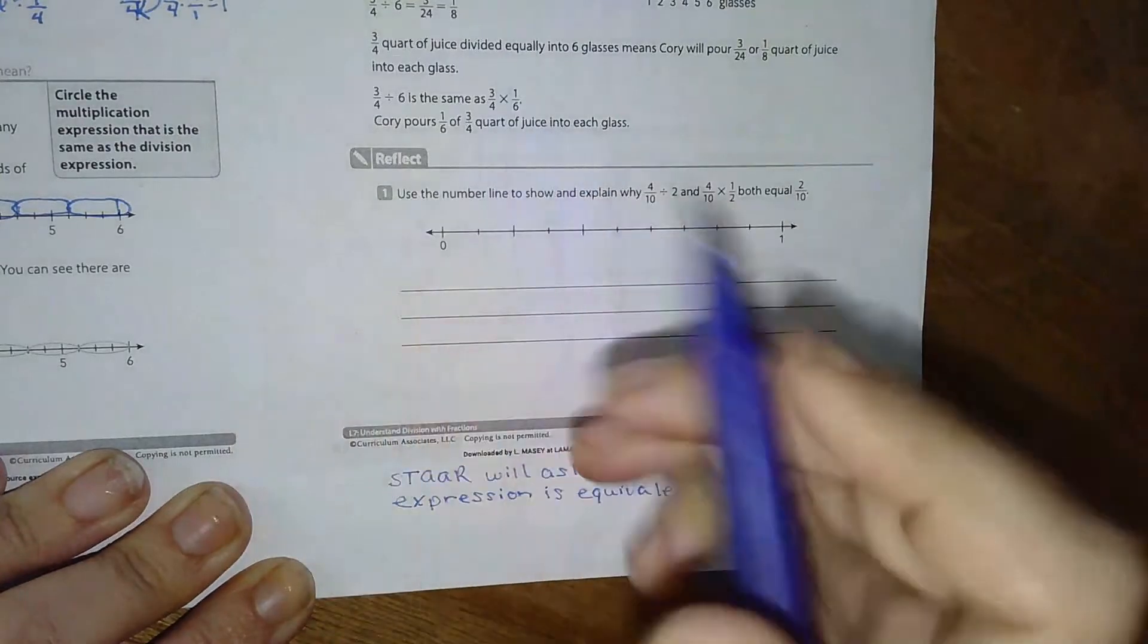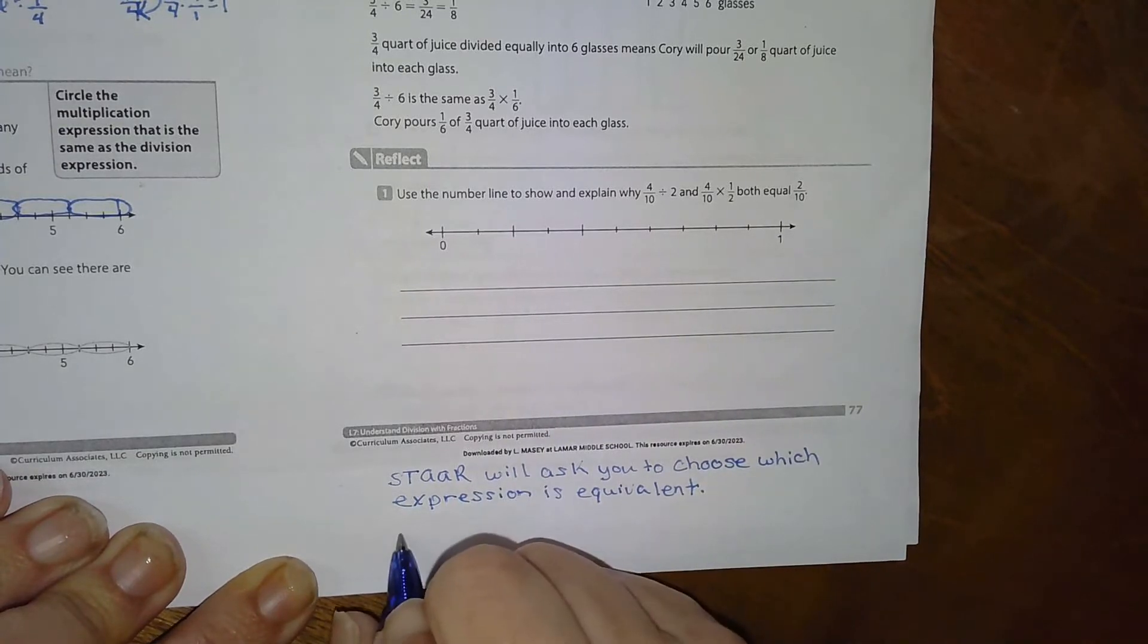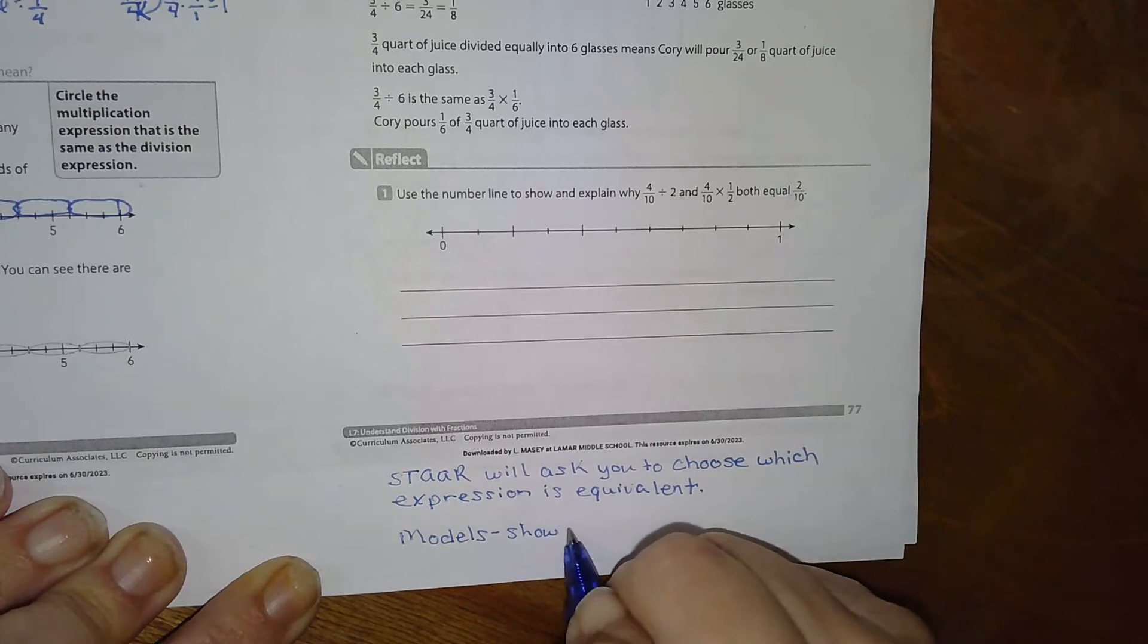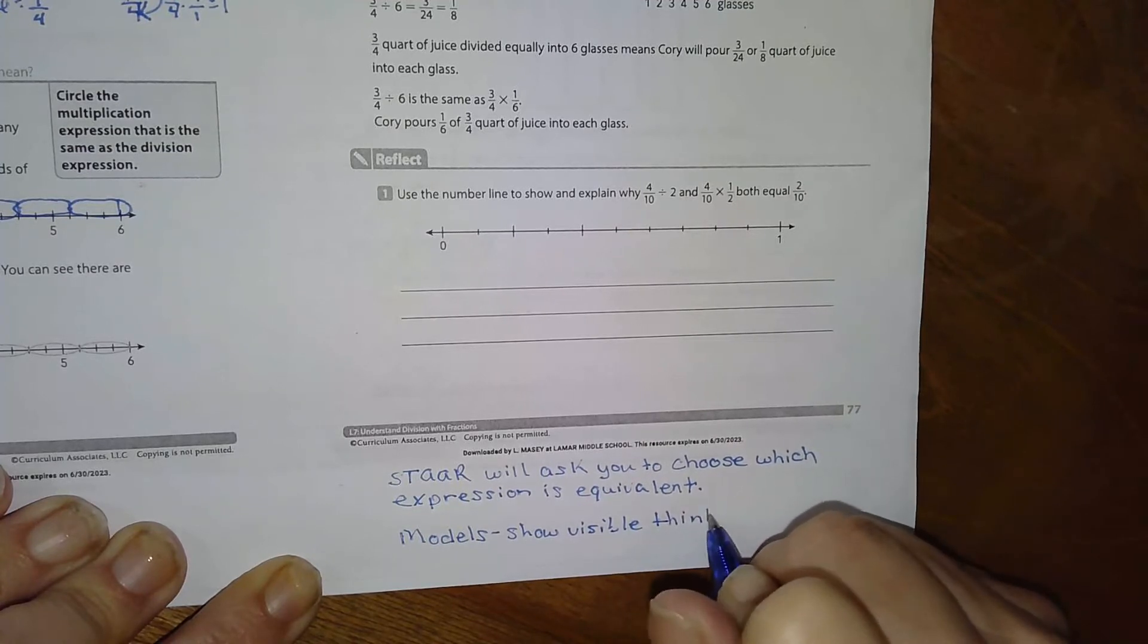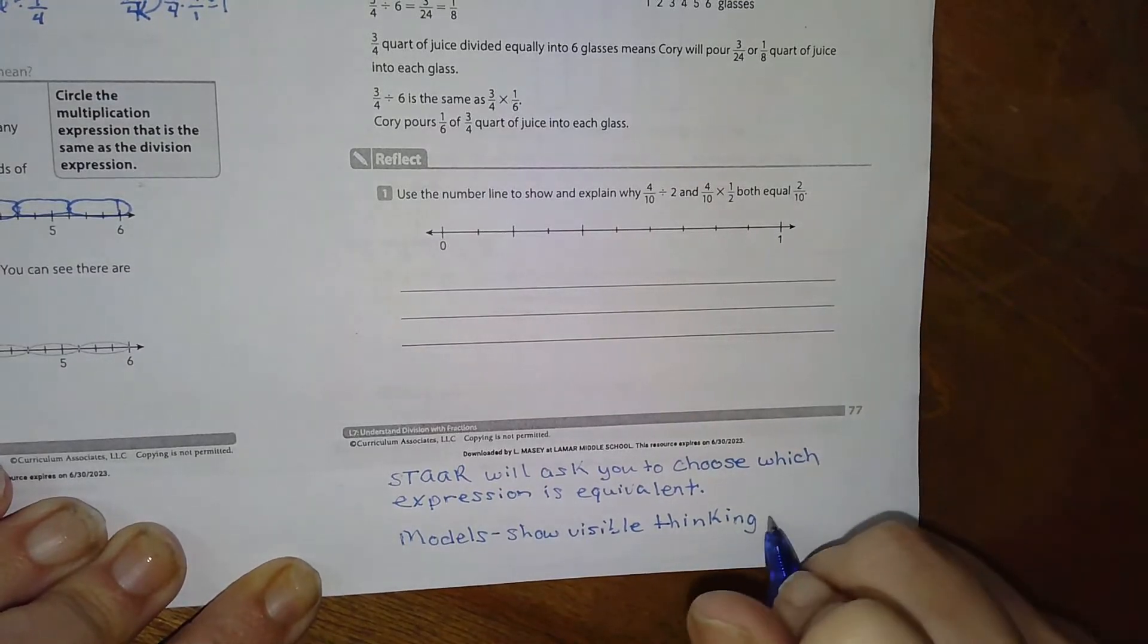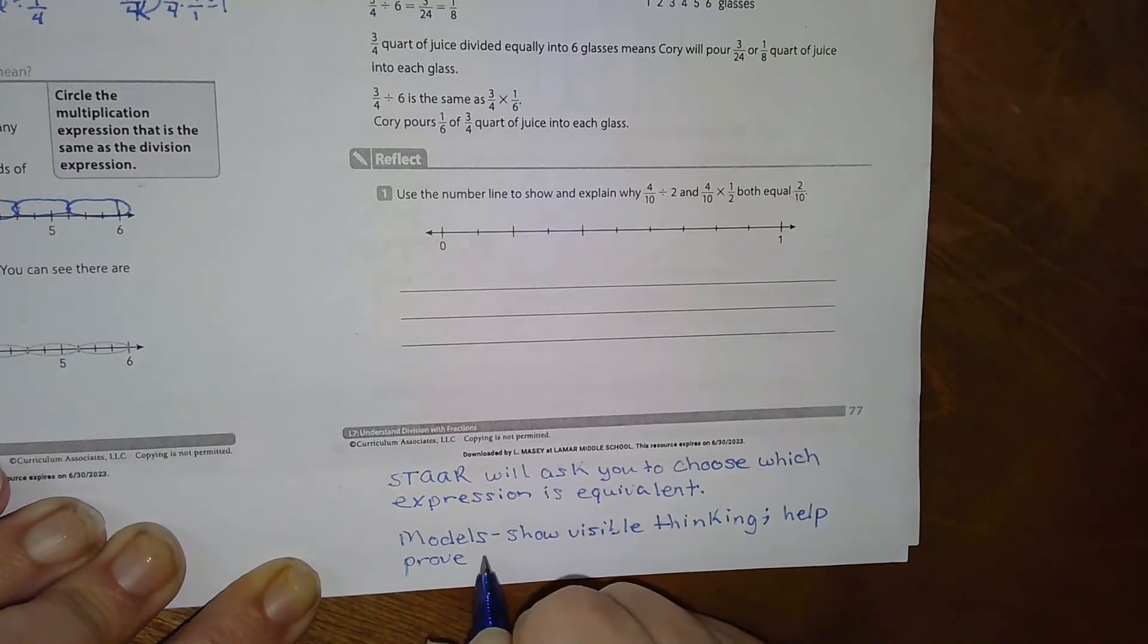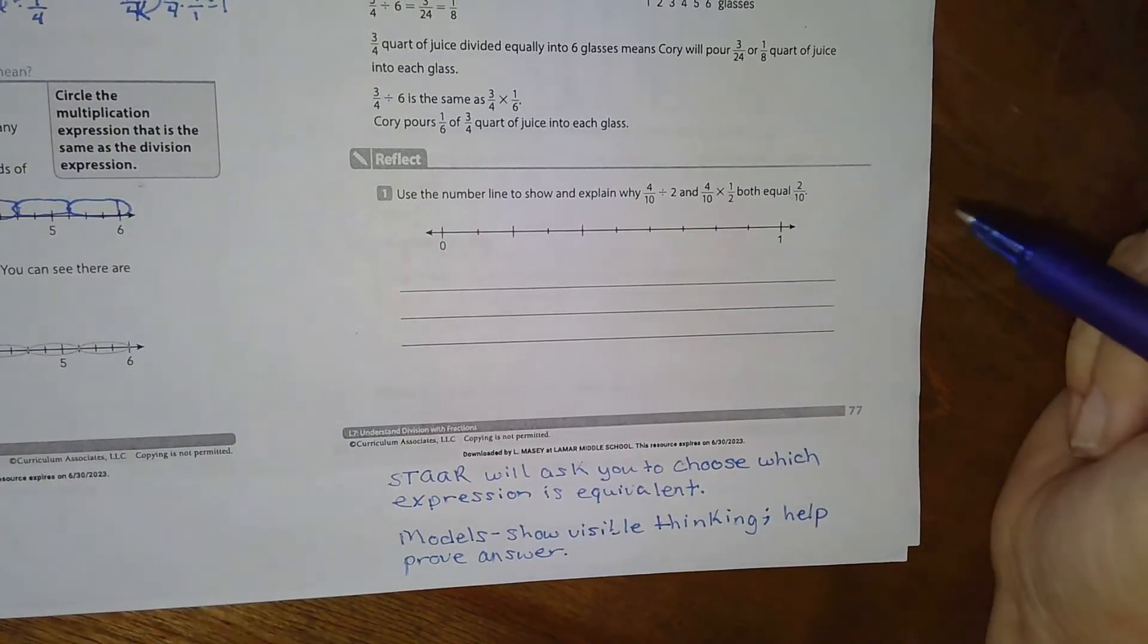Okay, what the number line and the array models do, that's some visual thinking, okay? That helps you visualize what's happening. I'm going to put models, and they show visible thinking, and help you prove your answer. And I've noticed that you guys really like models this year, and that's one of the reasons that I like our notes, because it goes into a little bit more details than we do in class.